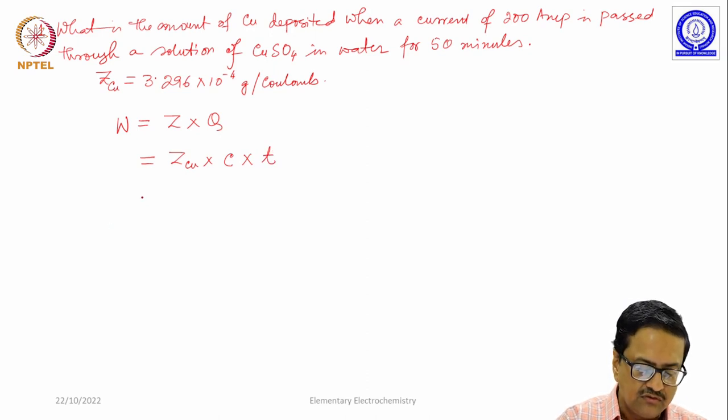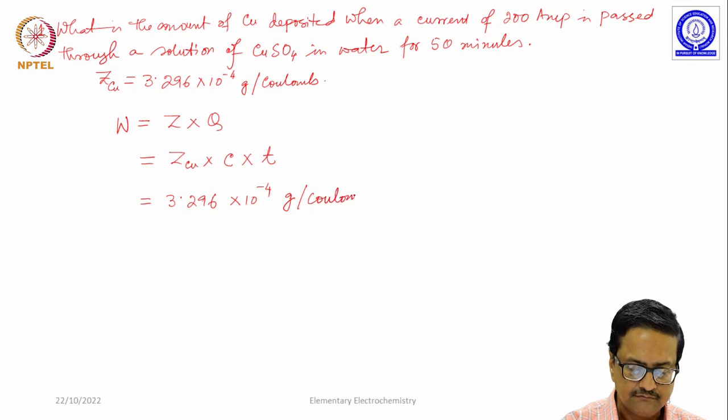We have the value of z as 3.296 × 10^-4 gram per coulomb, times current is 200 amperes, times 50 minutes which is nothing but 50 × 60 seconds.